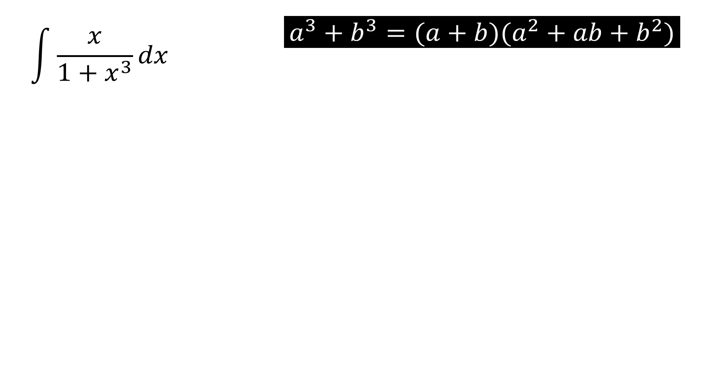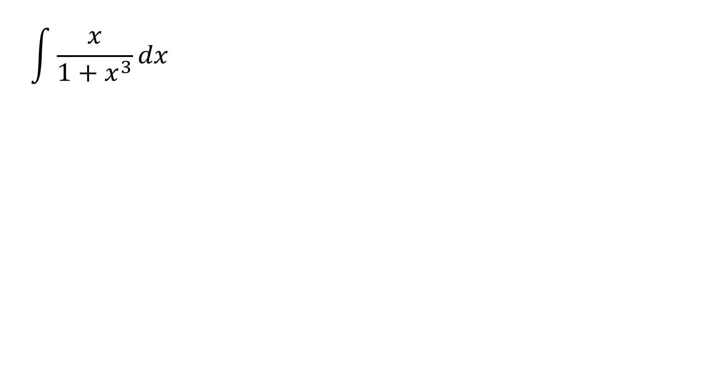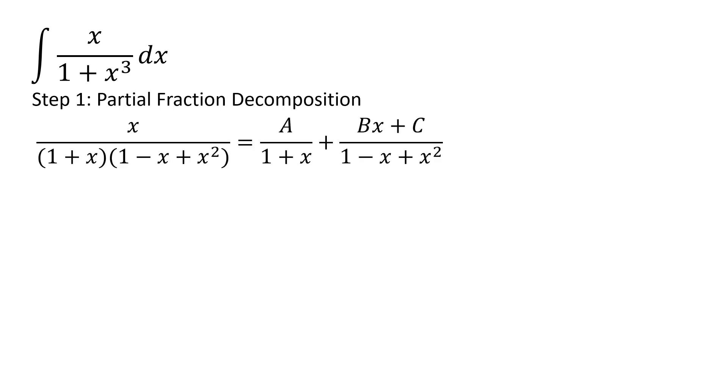The first thing I notice is that the denominator is a sum of two cubes. If I have a cubed plus b cubed, I can rewrite this as a plus b times the quantity a squared minus ab plus b squared. Therefore I will attempt a partial fraction decomposition and I will rewrite x over 1 plus x cubed as A over 1 plus x plus Bx plus C over 1 minus x plus x squared.